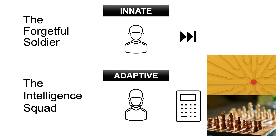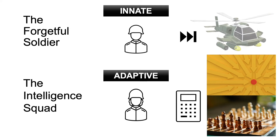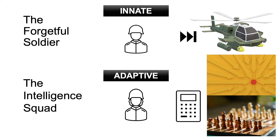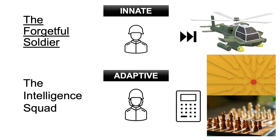Let's imagine the immune system to be the army of the human body or host. Think of innate immunity as the forgetful soldier — no memory, merely rushing off to war and fighting left, right and centre, acting rapidly in every sense of the word. No specific target; this system goes at anything not belonging there, in other words, foreign invaders.